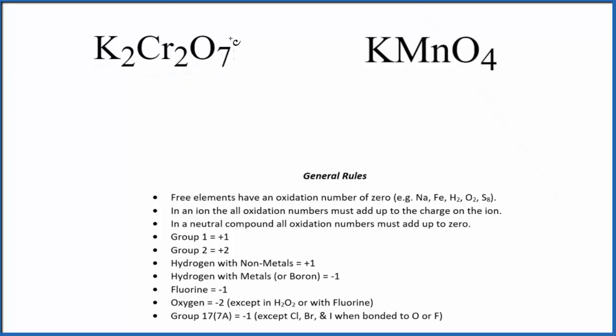We know that all of the oxidation numbers are going to add up to zero here because this is a neutral compound. It's not an ion. It doesn't have a negative or positive sign after. So they're all going to add up to zero. We know that group 1, potassium is in group 1 on the periodic table, that's plus 1. So each of these potassiums is plus 1.